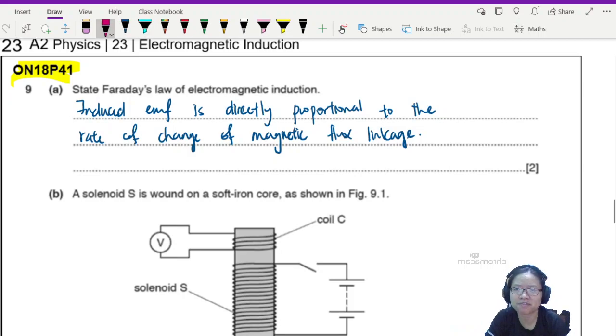Induced EMF is directly proportional, so the term induced is compulsory, to the rate of change of magnetic flux linkage. The marks are a bit inconsistent but if you write the whole sentence, you get two points.